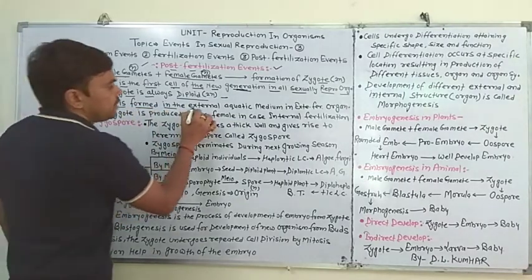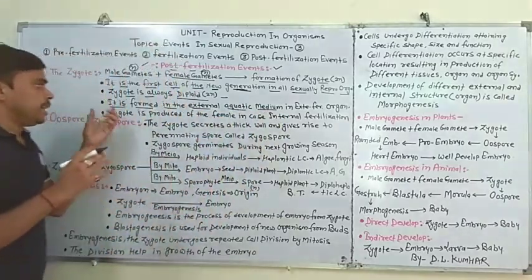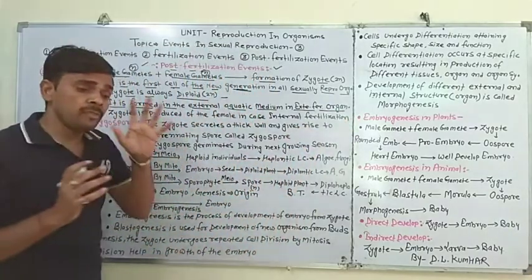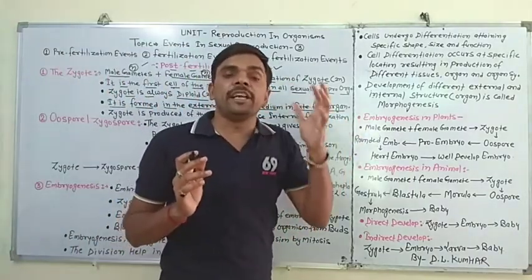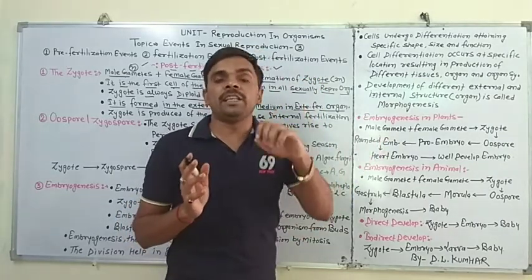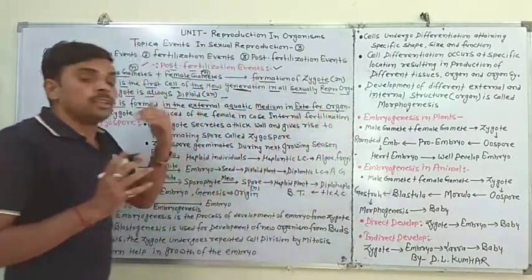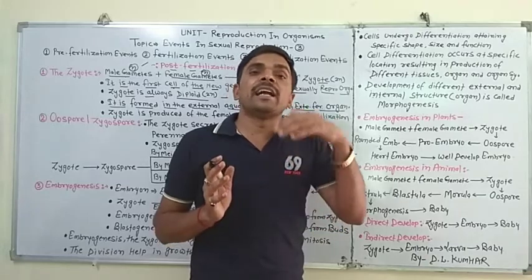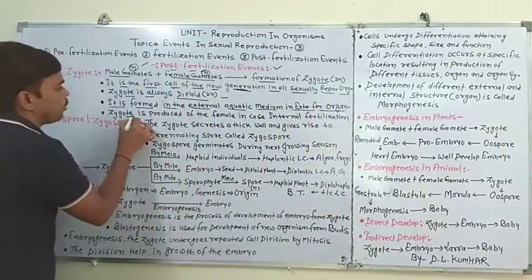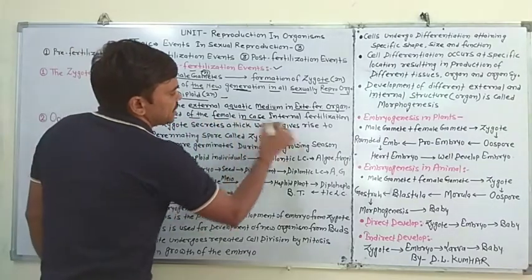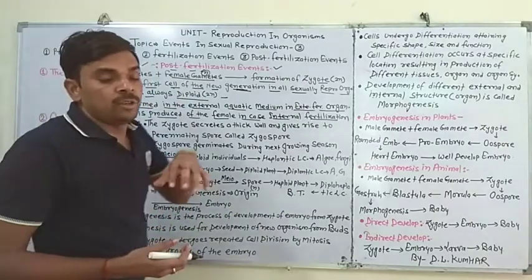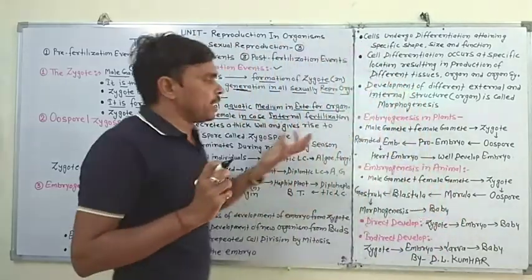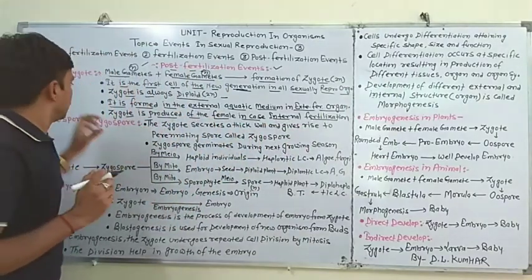It is formed in the external aquatic medium in external fertilization organisms. जिन living organisms में external fertilization होता है, उनमें Zygote का formation external aquatic medium में होता है। और internal fertilization वाले organisms में Zygote का formation internal होता है — inside the mother body या female body.